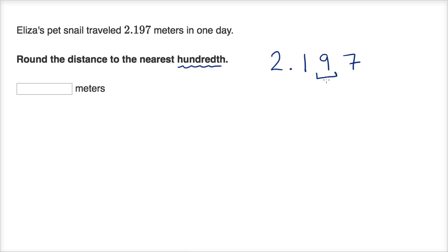This is the hundredths place right over here. And so if we're going to round to the nearest hundredth, we're going to go one place to the right. If this one place to the right is five or greater, we're going to round up. And seven is five or greater, so we are going to round up.